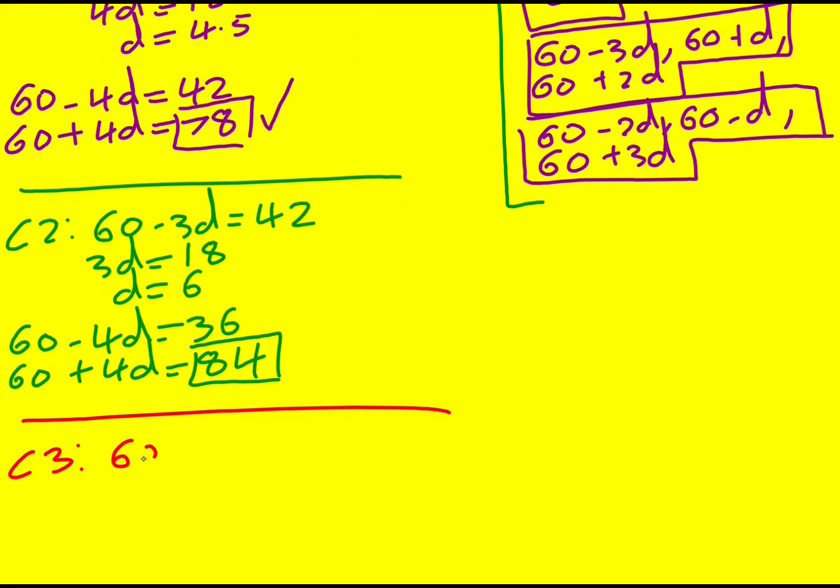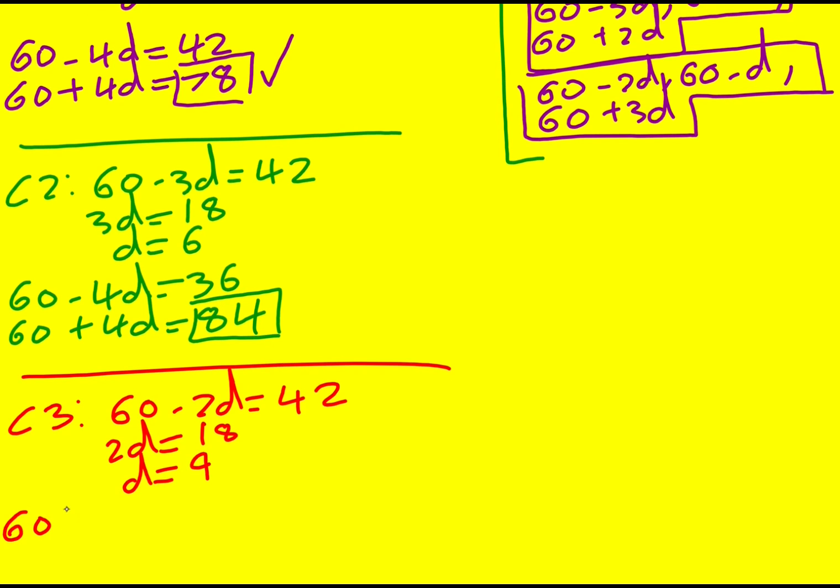Case three: 60 minus 2d is 42, 2d is 18, d is 9. 60 minus 4d is 60 minus 36, so 24. 60 plus 4d is 60 plus 36, 96. That one is okay as well.